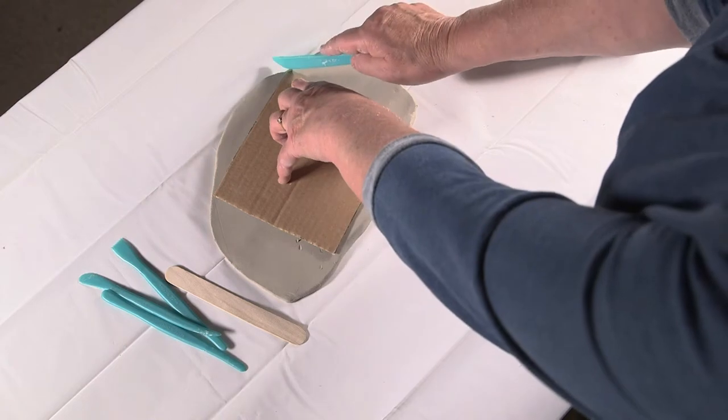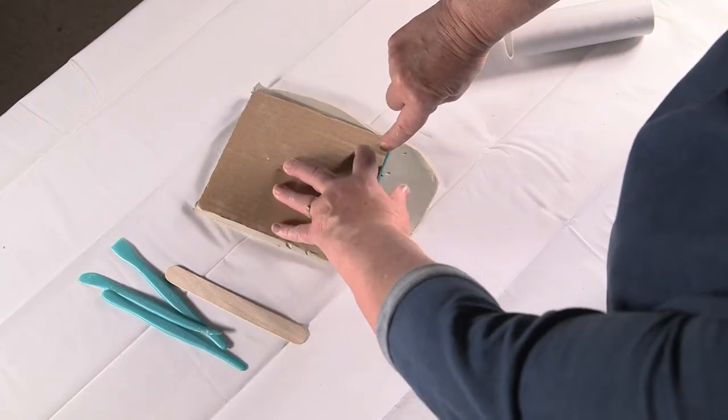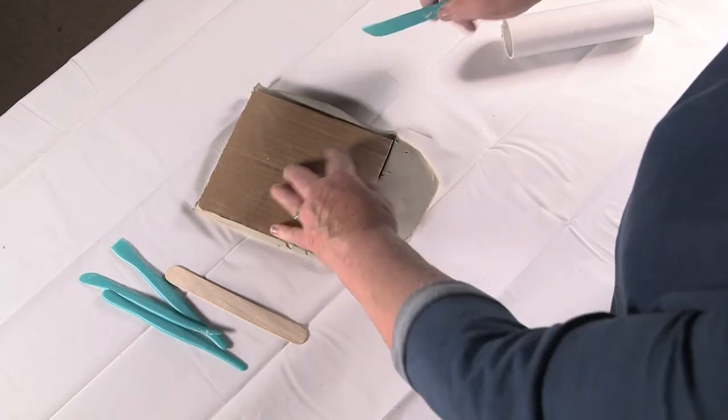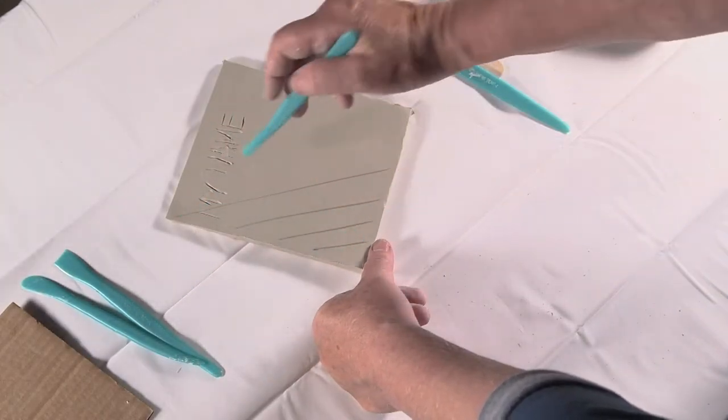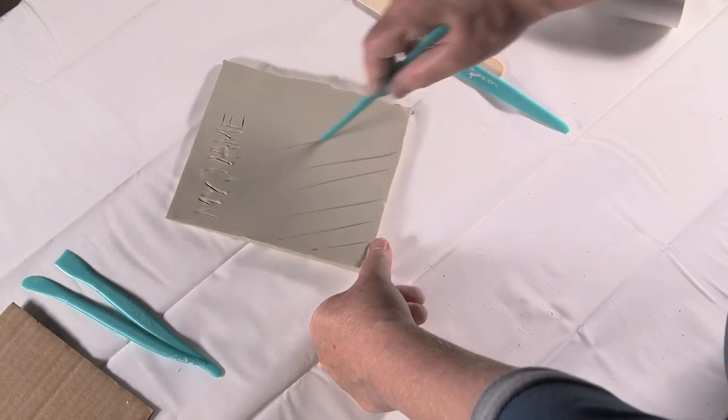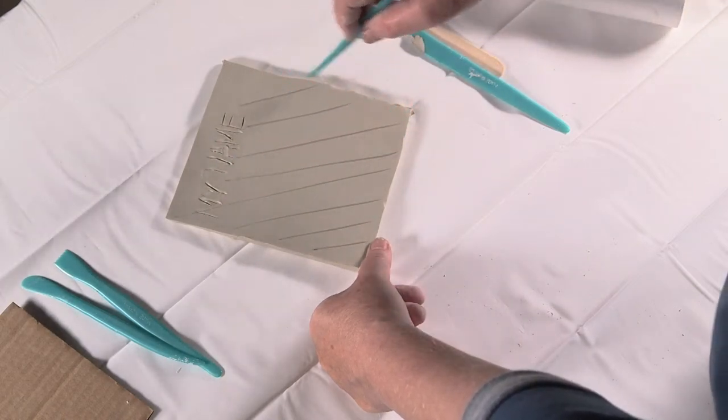Using a card template and some plastic cutting tools, cut the tile. Score the back of the tile like this to prevent it warping when it dries, and of course remind children to put their names on it.